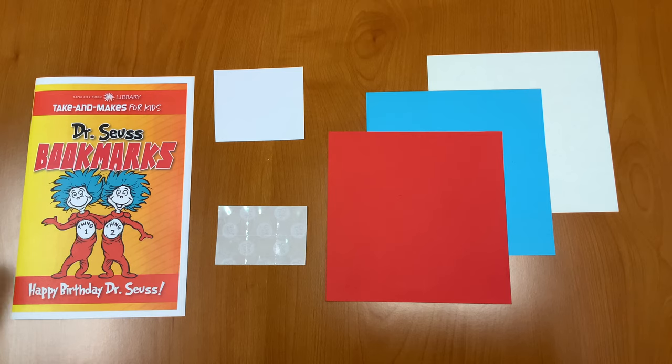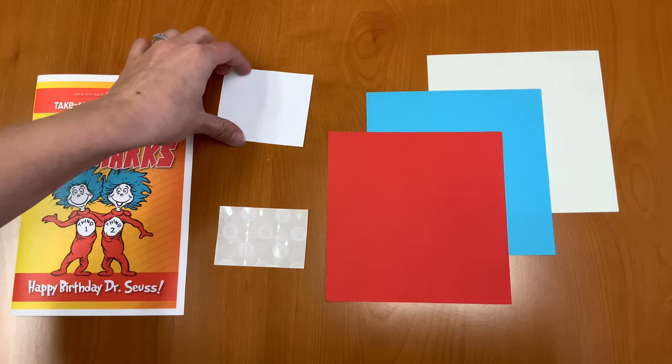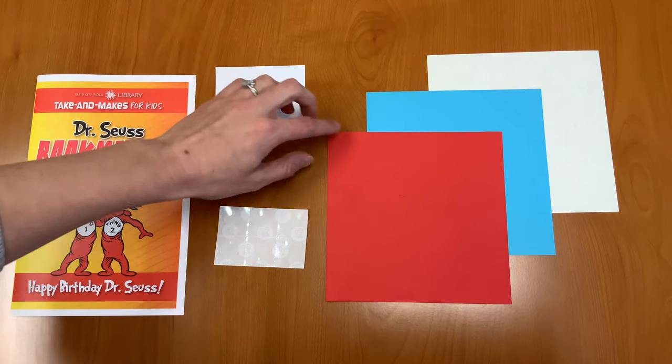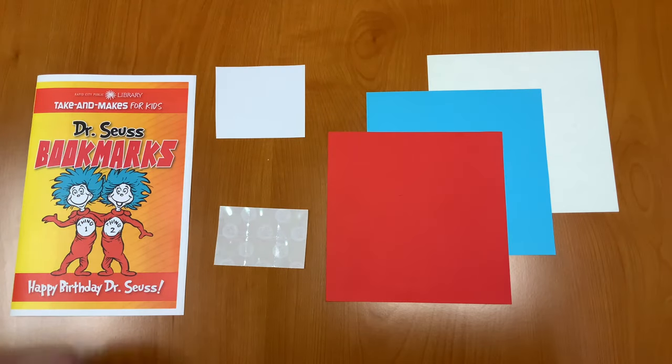In your Take and Make kit you should have an instruction booklet, six glue dots, a piece of white paper, and three pieces of origami paper: one red, one blue, and one white. Let's get started.